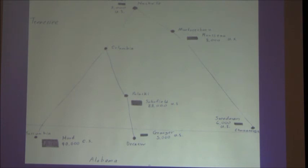Hood's plan when he leaves here with his basically 38,000 men is to get to Columbia and cut off Schofield. And because of the rain, the roads are a mess, he doesn't get there in time. Schofield beats him.